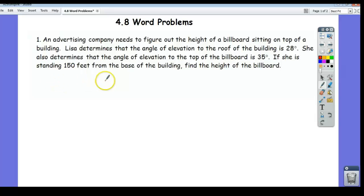Now this word problem here is a little more complicated than the ones you've seen so far in this course, so it's worth doing a video on. So it says an advertising company needs to figure out the height of a billboard sitting on top of a building. So I'm going to draw that here.